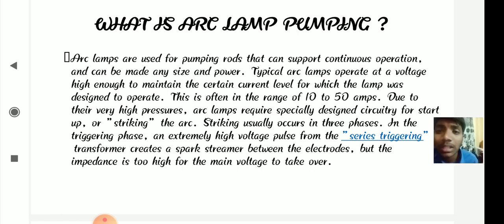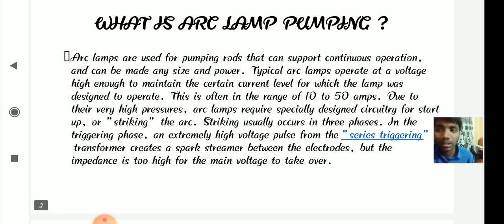Arc lamp startup or striking the arc usually occurs in three phases. In the triggering phase, an extremely high voltage pulse from the series triggering transformer creates a spark streamer between the electrodes, but the impedance is too high for the main voltage to take over.